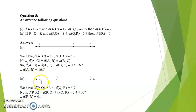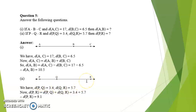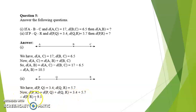Next, P dash Q dash R: PQ is 3.4 and QR is 5.7. How much is PR? PR equals PQ plus QR, that is 3.4 plus 5.7, so distance PR is 9.1.